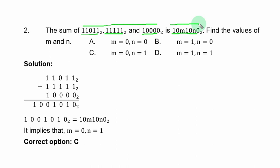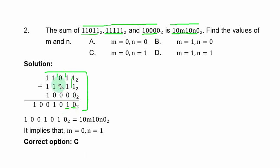In binary we only have digits 0 and 1. Starting from the units place: 1 + 1 = 10 in base 2, so put down 0 and carry 1. Adding the next column gives 11, put down 1 and carry 1. Continuing: 1 + 1 = 10, put down 0 carry 1; next column 1 + 1 + 1 = 11, put down 1 carry 1.